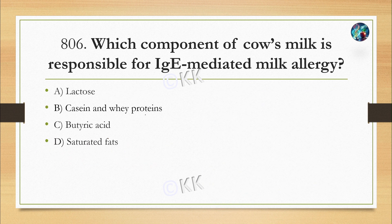Which component of cow's milk is responsible for IgE-mediated milk allergy? Option A: lactose. Option B: casein and whey proteins. Option C: butyric acids. Option D: saturated fats. The correct option is Option B — casein and whey proteins. This is distinct from lactose intolerance, where lactose is the issue; in milk allergy, it is the casein and whey proteins that trigger the IgE-mediated response.